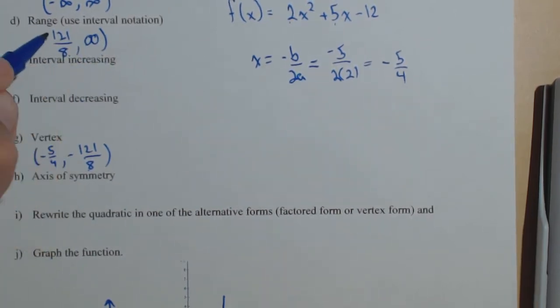Infinity always gets a parenthesis. There's never a question there. For range, we want to include this number so it gets a bracket.